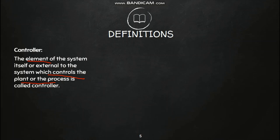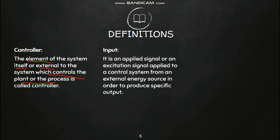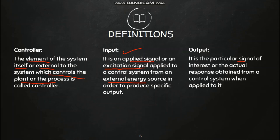Next is 'input.' Input is an applied signal — something which we are giving to the system. It is also termed an excitation signal in some books. The signal applied to a control system from an external energy source in order to produce a specific output is known as input. Whenever we give an input to the system, we will be expecting some output. So what is output? Output is the actual response obtained from the system — the response of the system is basically known as the output.